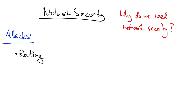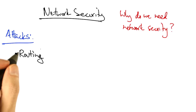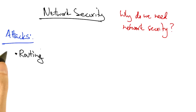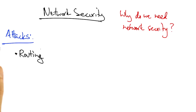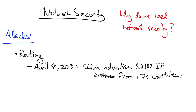One part of the infrastructure that can be attacked is routing. The internet's routing protocol, the border gateway protocol, is notorious for being susceptible to different kinds of attacks.